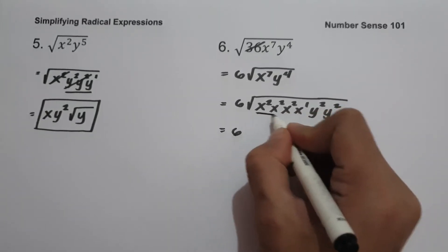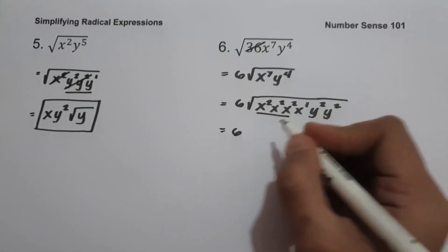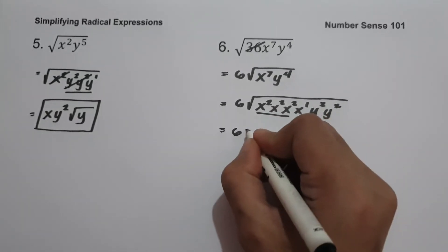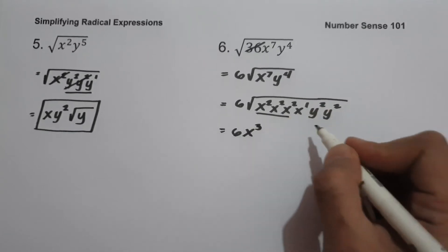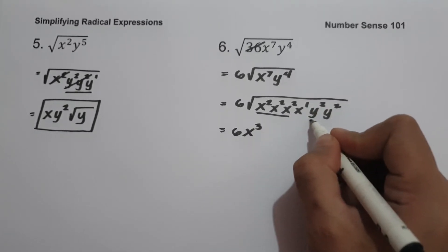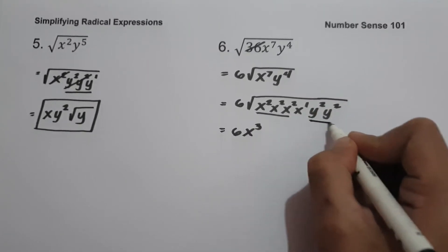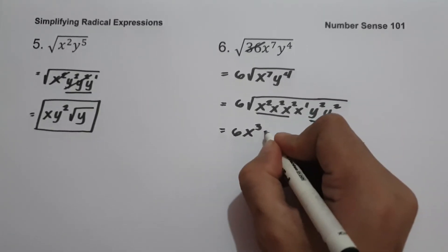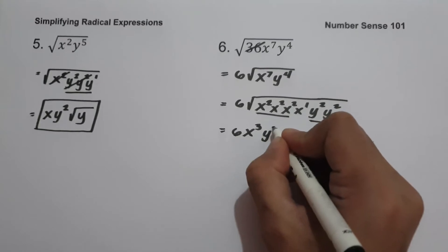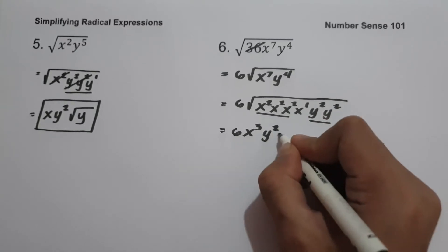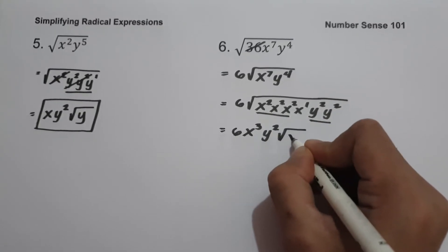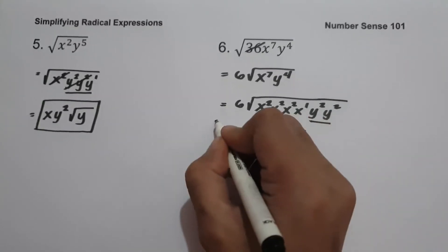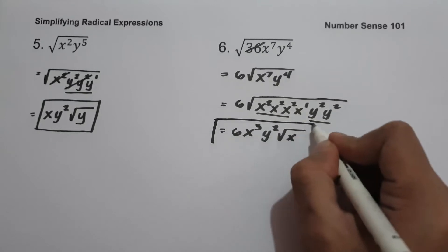Since we have 3 x-squared terms we get x cubed, and 2 y-squared terms give us y squared. So our answer is 6x cubed y squared, square root of x.